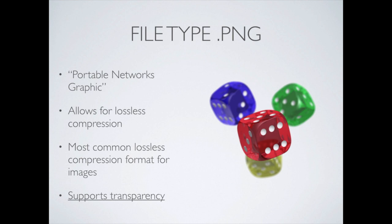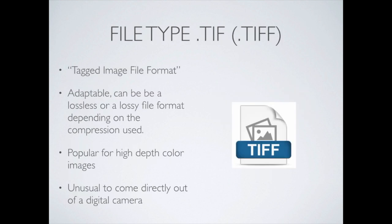PNG is kind of like a JPEG. It does allow for some lossless compression — we can make it smaller without throwing away parts of the image. It's the most common for lossless compression and it's becoming more and more common. The biggest thing about it, and the reason we're going to use it in this class a lot, is because it supports transparency. If we cut out the background of a particular object and save it as a PNG, that background will stay cut out — on a JPEG file it just fills the background with white. TIFF is another type — it's tagged image file format, can be lossless or lossy, and is really popular for high depth color images, though very unusual to come directly out of a digital camera.